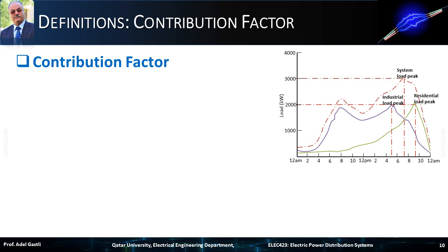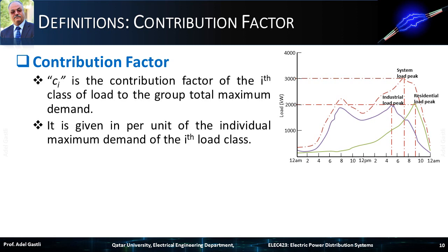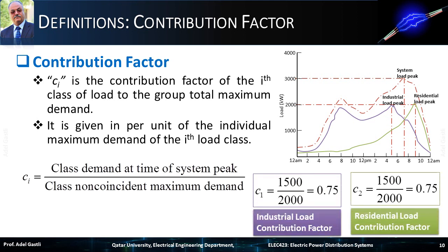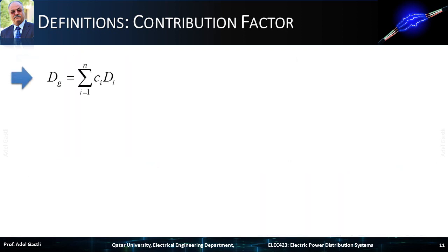Now let's define another factor: the contribution factor of an individual load i, denoted by Ci. Ci is the contribution factor of the ith load to the group maximum demand, given in per unit of the individual maximum demand of the ith load. It is the ratio of the class demand at time of system peak to the class non-coincident maximum demand. The total maximum non-coincident or diversified demand DG equals the sum of the contribution factor of load i times the maximum demand of load i, for i equals 1 to N. This is equivalent to writing the coincidence factor Fc as the ratio of the sum of the individual demand multiplied by its contribution factor, to the sum of the total maximum non-coincident demand.